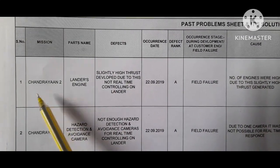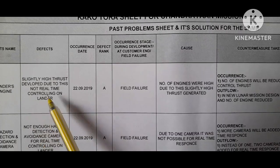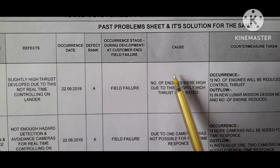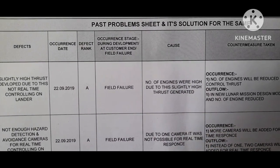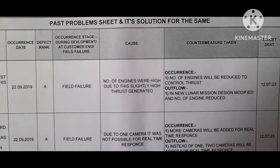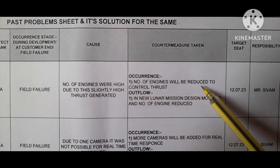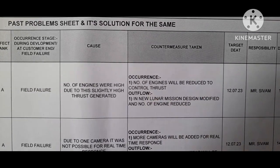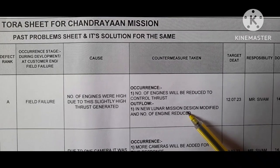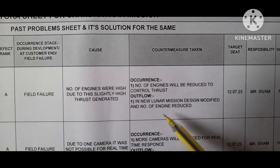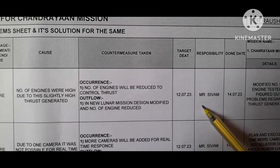Occurrence stage: it happened during field failure because it occurred in Chandrayaan's orbit. What is the cause of the high thrust? The cause is that the number of engines was high, which generated slightly high thrust, and controlling speed was out of range. Counter measure taken: the number of engines will be reduced to control thrust in the upcoming mission — Chandrayaan 3.